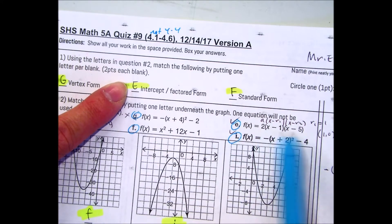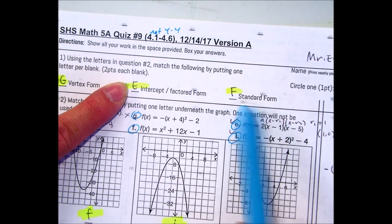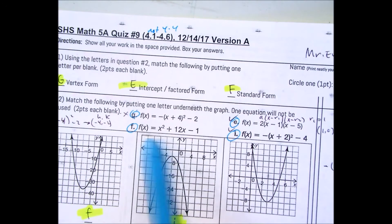The one with double parenthesis, that's intercept or factor form, that's letter E. In standard form has no parenthesis, that would be F in descending order.